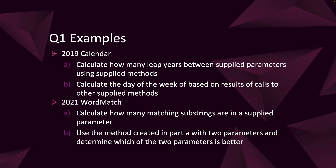So for the first question, we have our easy question. In 2019, we had the calendar question. We had to calculate how many leap years existed between two supplied parameters to the method we were given. Using the methods that were already given to us, we could assume they work. Then in part B, we had to calculate which day of the week based on results of calls to other supplied methods. So we're working with methods given to us, one of which we wrote, and we're determining what the actual results of those method calls will be. We're using objects and methods attached to them, calling those methods and combining that with logic.